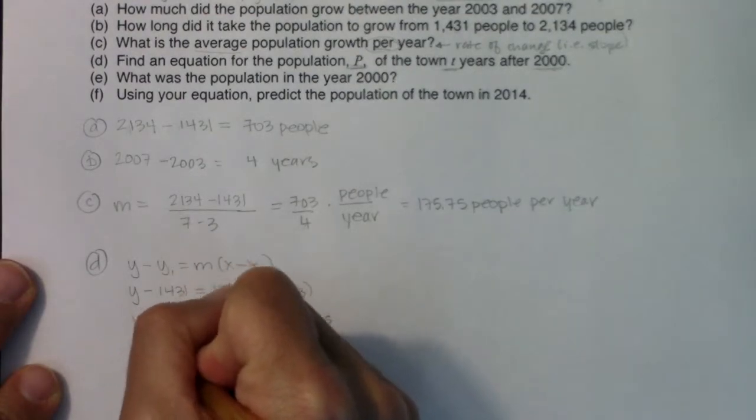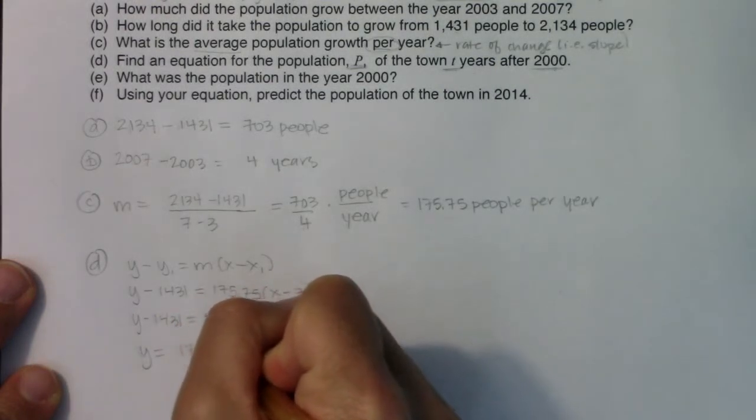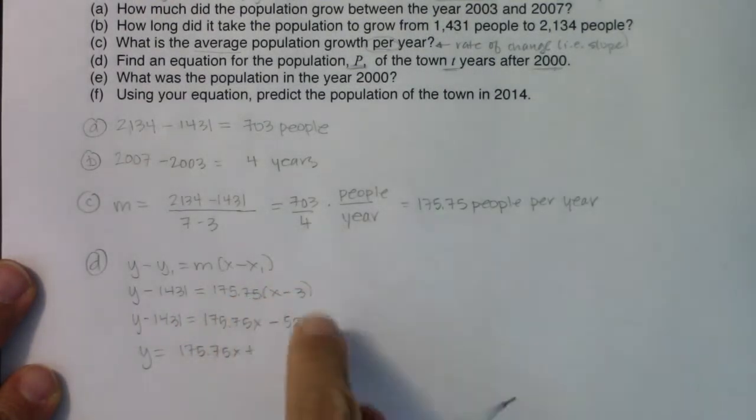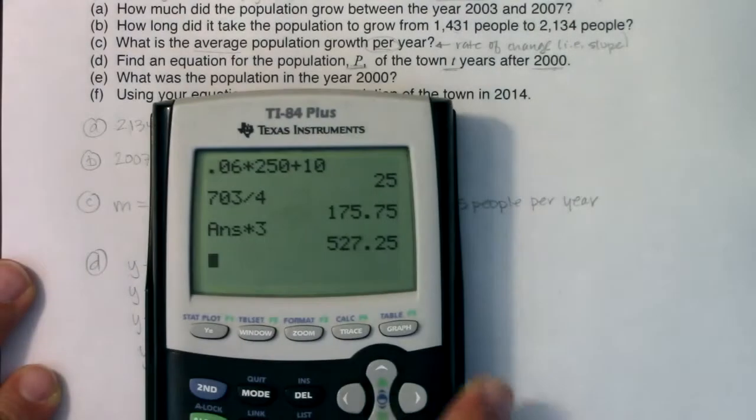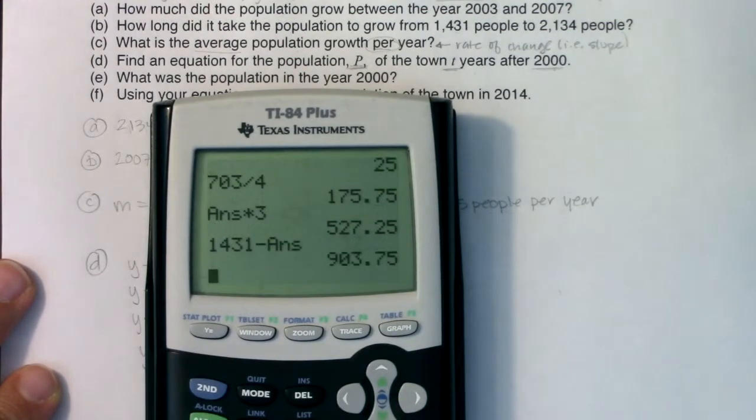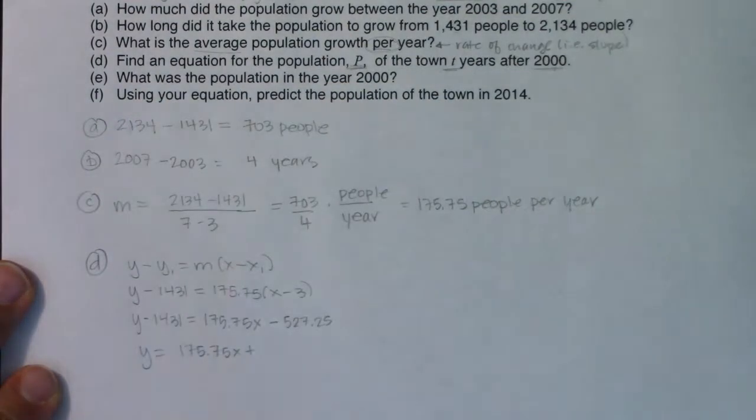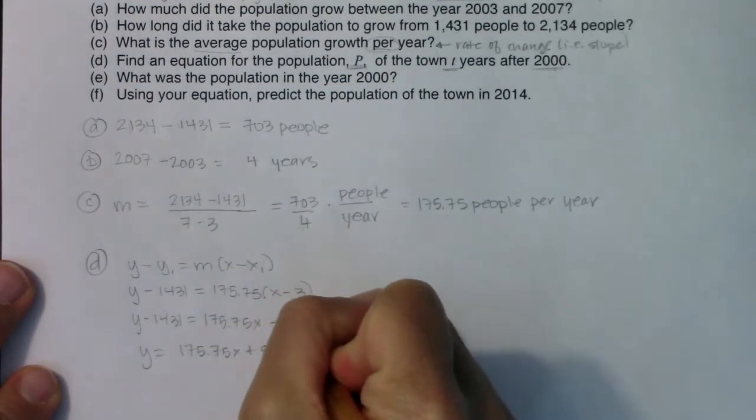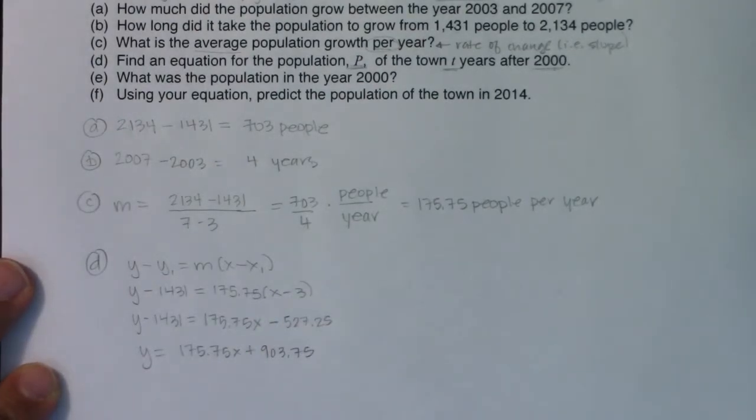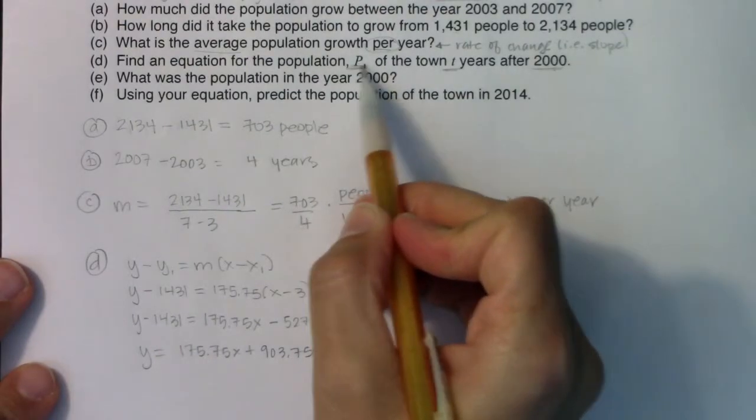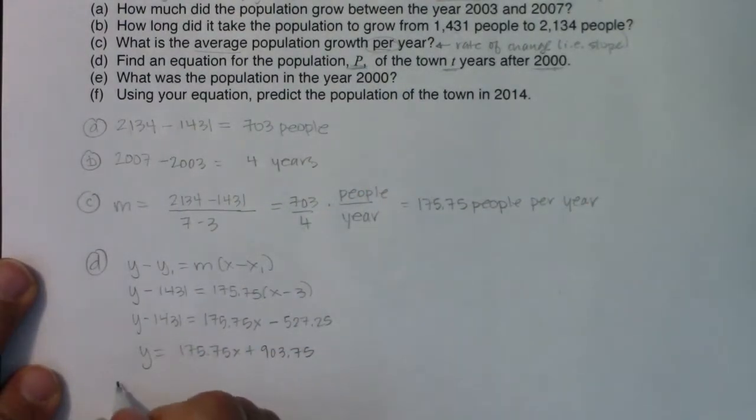And then if I add the 1,431 over, we'll have 175.75X. It'll wind up being a plus because that number in absolute value is smaller than that one. We will do 1,431 minus this answer, and that will be 903.75. I don't want to finish off here. I want to make sure I answer the question asked of me, and it said use P and T for the letters, not X and Y. So ultimately, my function is P of T equals 175.75T plus 903.75. This is my linear model.